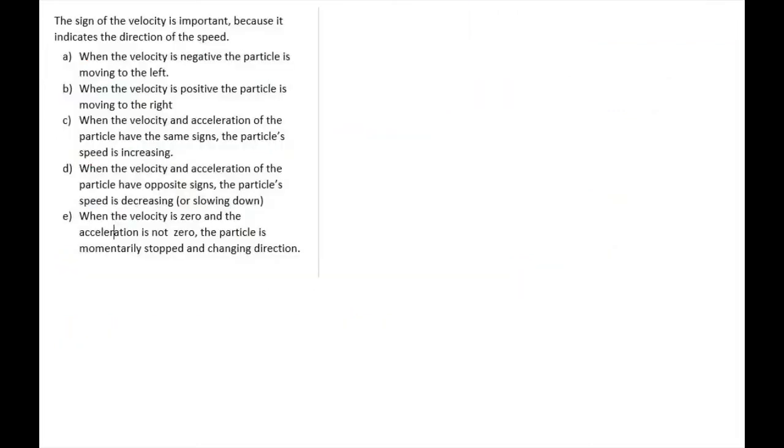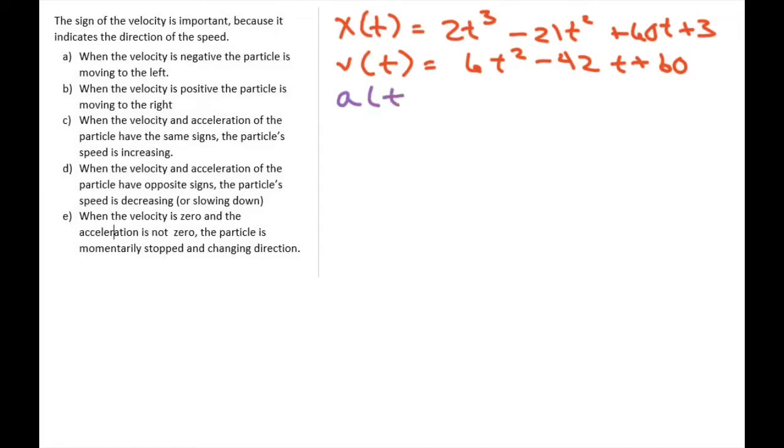So let's do the first part. The first part is just taking derivatives. So I'm going to write x of t again, which is 2t cubed minus 21t squared plus 60t plus 3. And so your velocity of t is just going to be 6t squared minus 42t plus 60. And then your acceleration is going to be the derivative of your velocity, which is going to be 12t minus 42. So that's the first part.